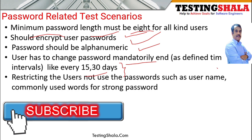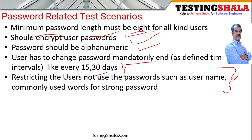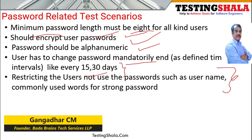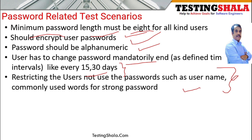The fifth important scenario is that users commonly use passwords like 'test123' or 'username123'. The application should not accept such commonly used passwords. You should ensure the application enforces more complex passwords so that user passwords are very strong. Talk to your developer, your lead, your business analyst, or your product owner to ensure this kind of validation is available in the application.